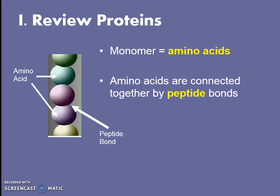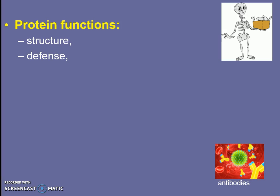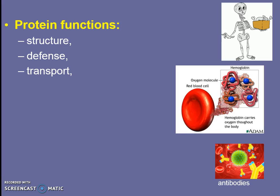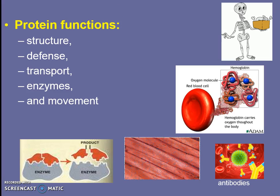Now that we know a little bit about proteins and their structure, let's review the function. The function of proteins is very detailed and there are a lot of different types. There's structure — it gives us our bones, our hair, and our nails. There is defense, like antibodies. They help us transport things, like transporting oxygen via blood cells, and they help speed up chemical reactions like our enzymes. Notice that energy is not a major function of proteins. We do have movement, but again, we do not have energy.